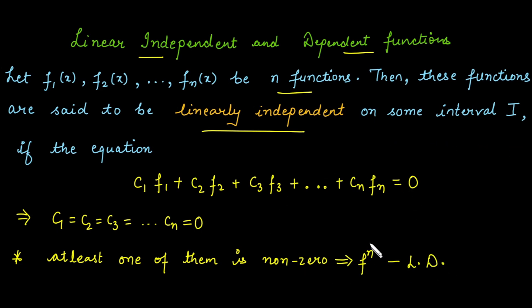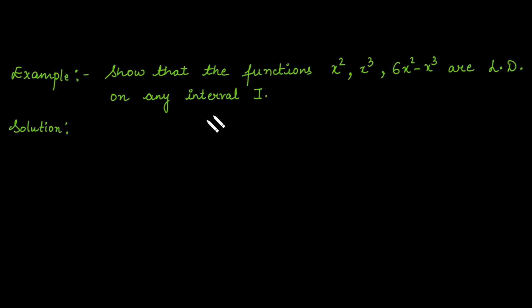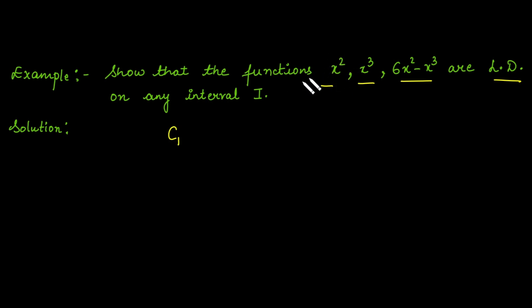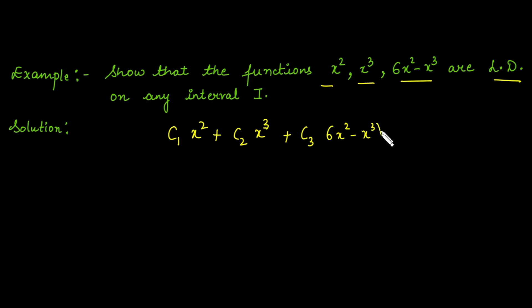Let us understand this definition with the help of an example. The question is to show that three functions are linearly dependent on any interval. We write the equation: c1·(x²) + c2·(x³) + c3·(x² - x³) = 0.